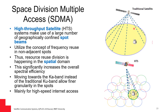To understand space division multiple access, consider a traditional satellite where all users share the same spot. If user A is using frequency f1, no one else inside the spot can use that same frequency, and these spots can cover an entire continent. However, in high throughput satellites, you have small spots that reuse the same frequency. For example, a green spot can reuse frequency f1 without causing interference to the initial user, and a red spot using f2 can reuse f2 at a different position, achieving much higher efficiency.